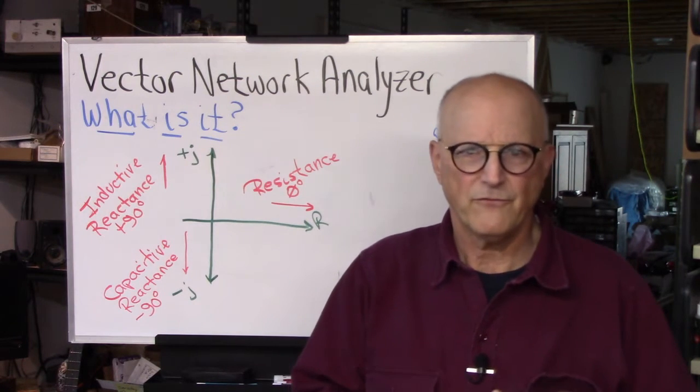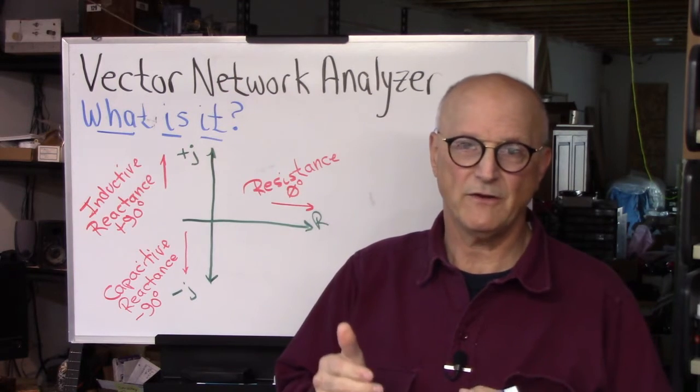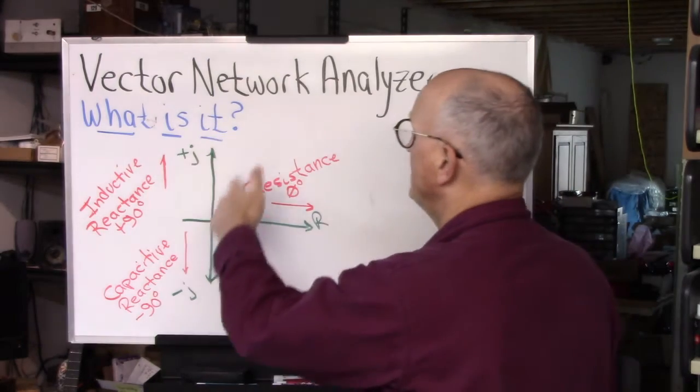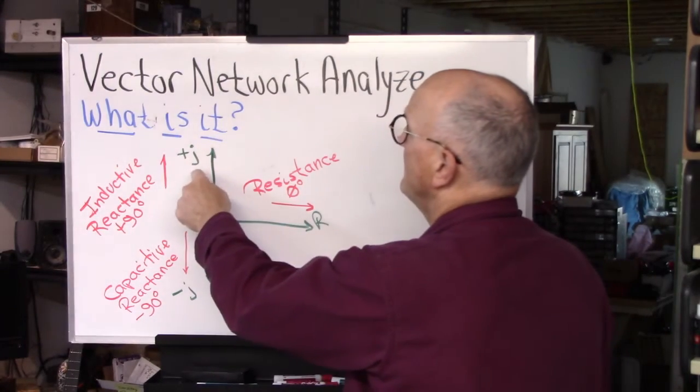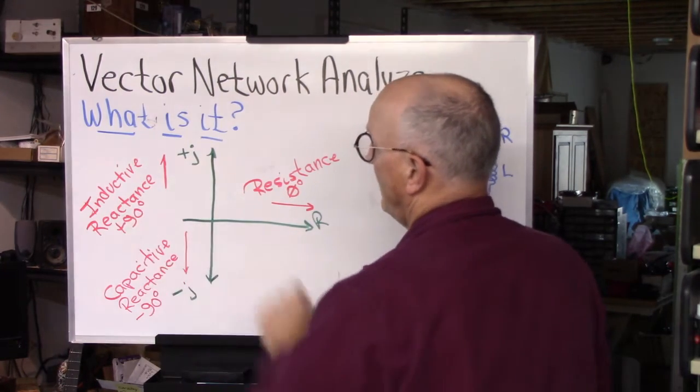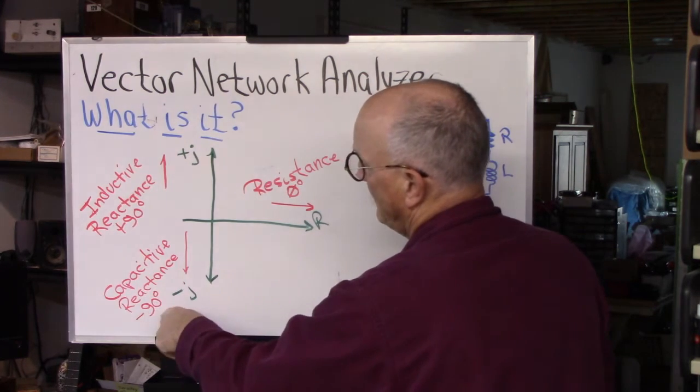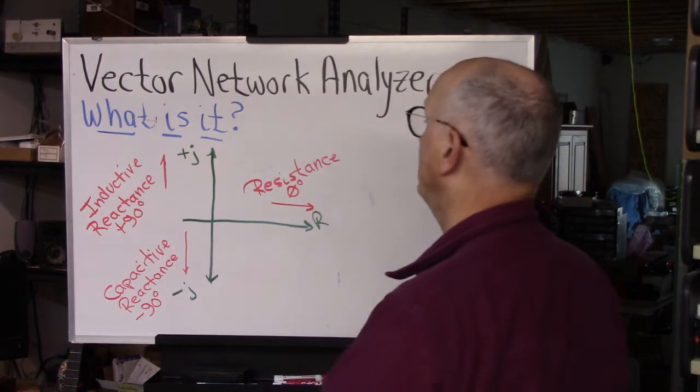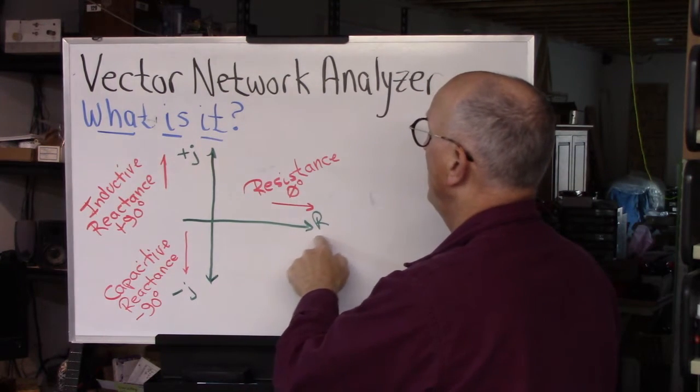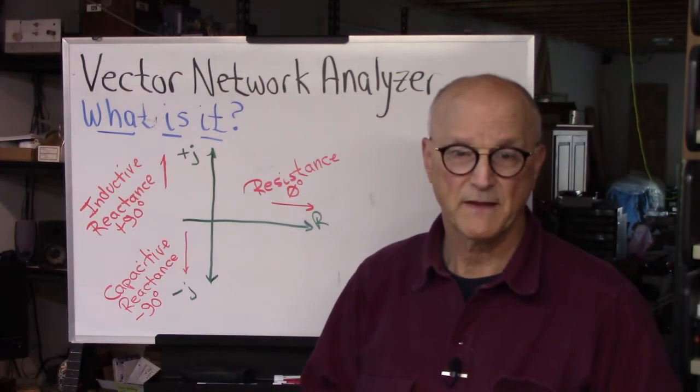Now in the RF world, the phase of a network can be represented by a vector on the real imaginary Cartesian coordinate plane. So here we have the Cartesian coordinate plane. We have plus j, the plus imaginary, where we plot inductive reactance. We have the minus imaginary, down here, where we plot the capacitive reactance. And we have the horizontal axis, which is the real axis, where we plot the pure resistance.